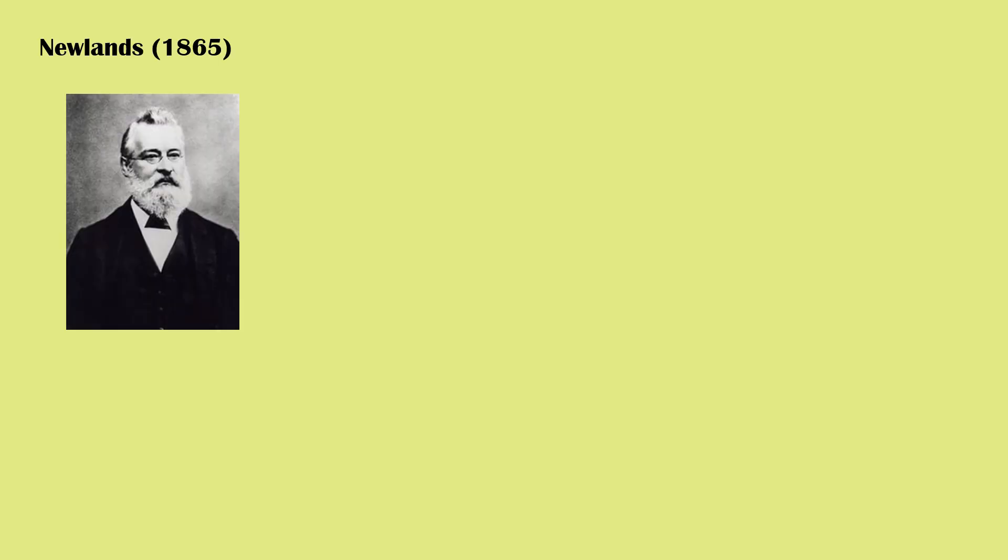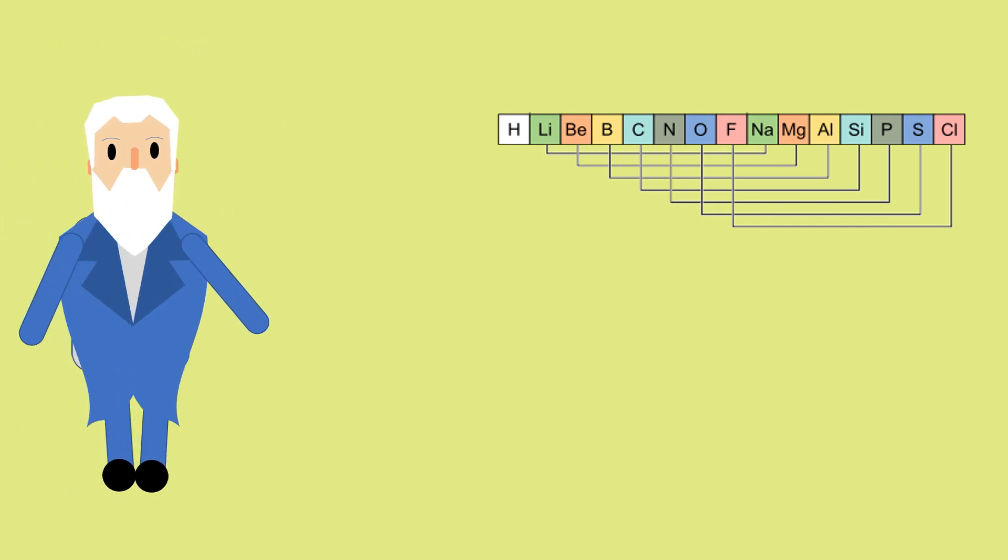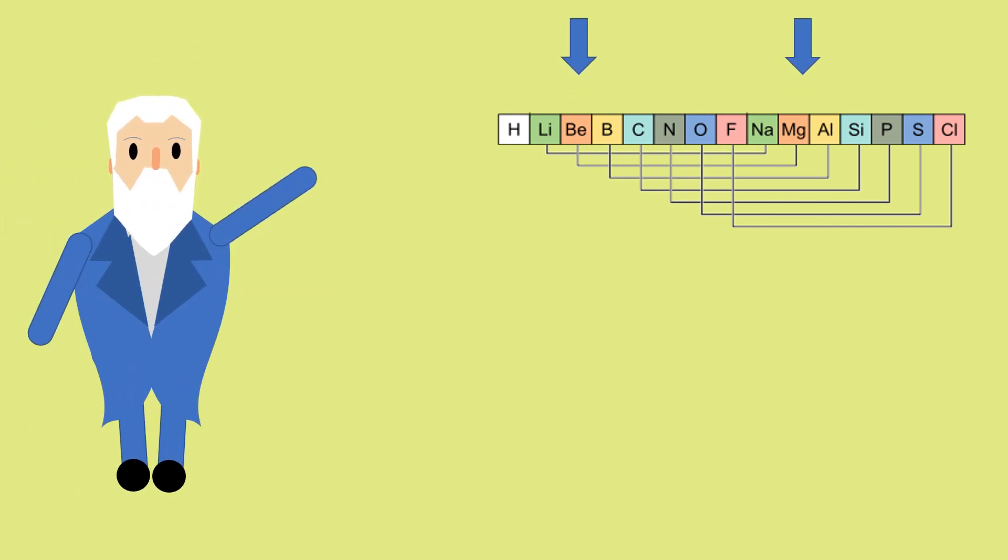In 1865, Newland suggested that the elements should be arranged in the increasing order of the atomic mass. He said that every eighth element, beginning from any element, resembled the first element in its physical and chemical properties. Fascinating, isn't it?